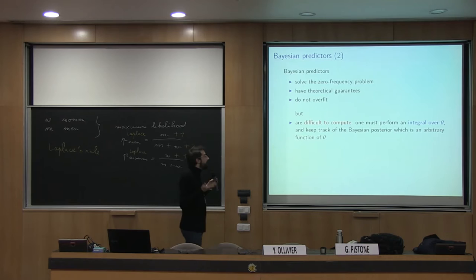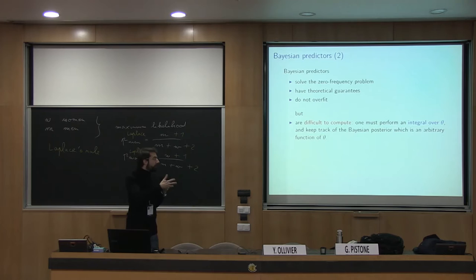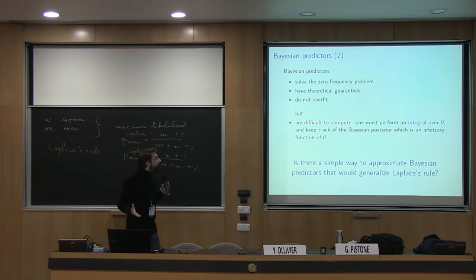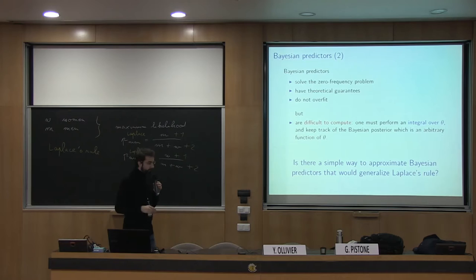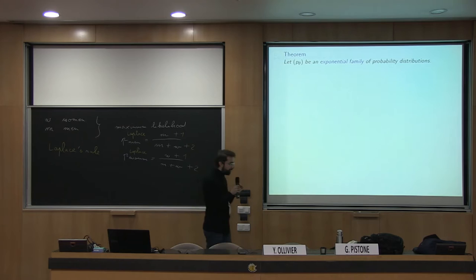There remains the question of whether there is a simple way to approximate Bayesian predictions — a simple way that has something to do with Laplace's rule. The answer is yes in some cases. The theorem starts with an exponential family of probability distributions.